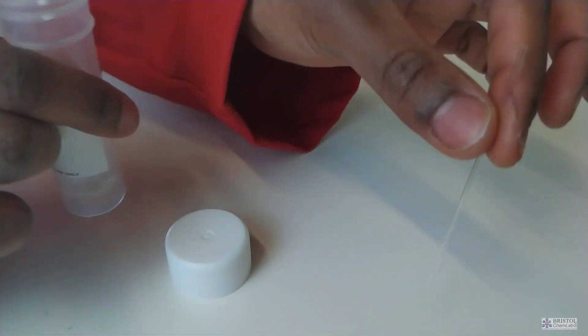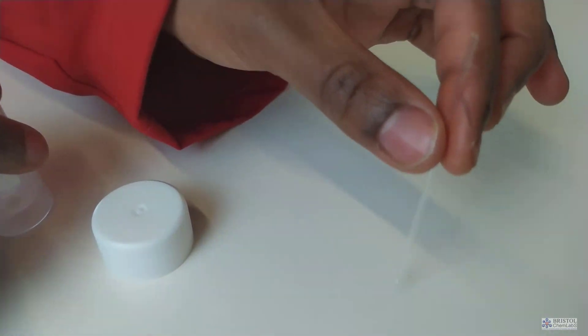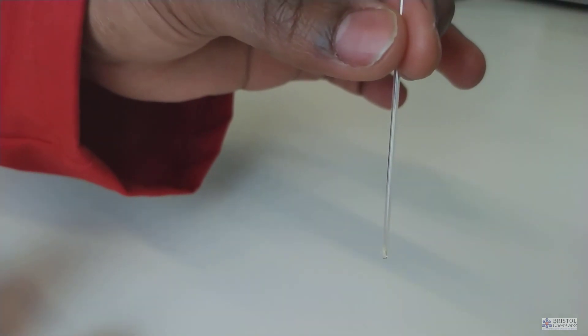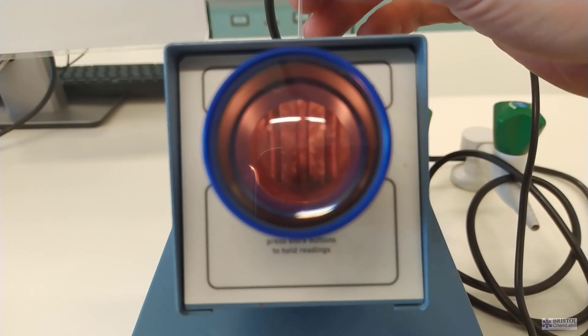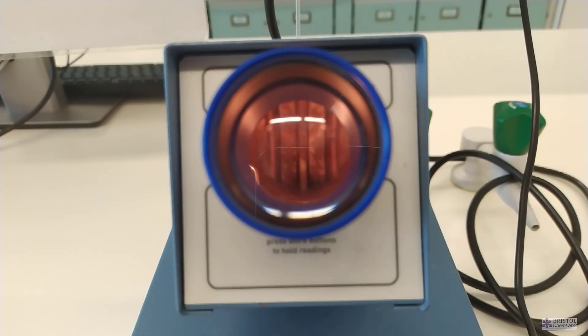Melting point apparatus come in many different shapes and sizes. All of them will have a heating block. They will also have a magnifying glass window to observe the sample in the heating block.